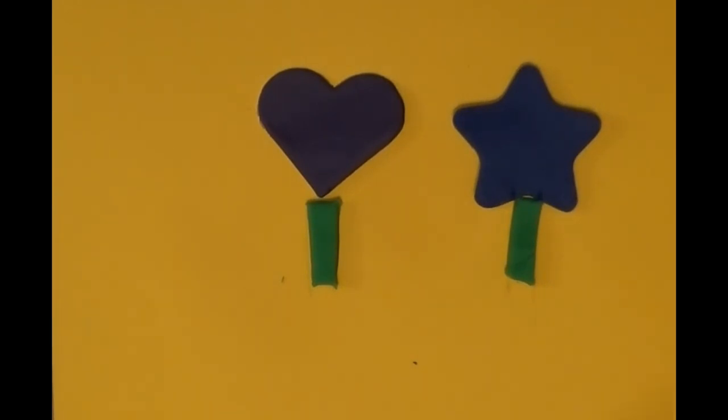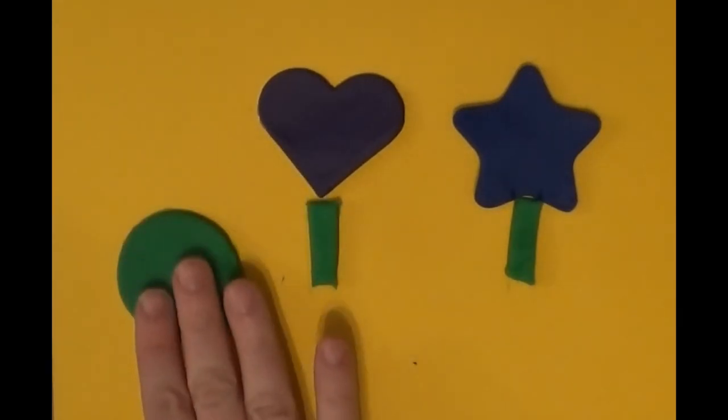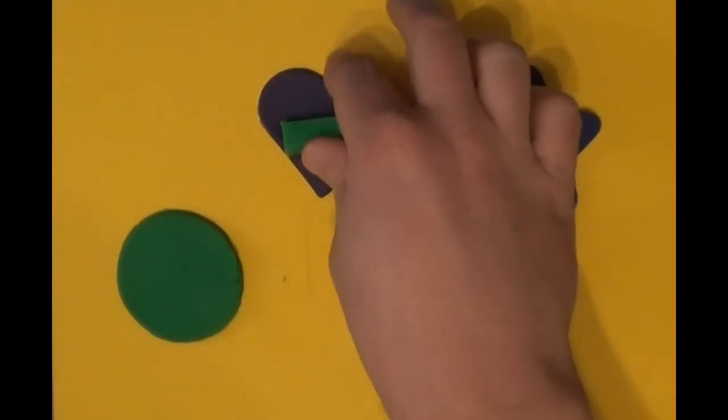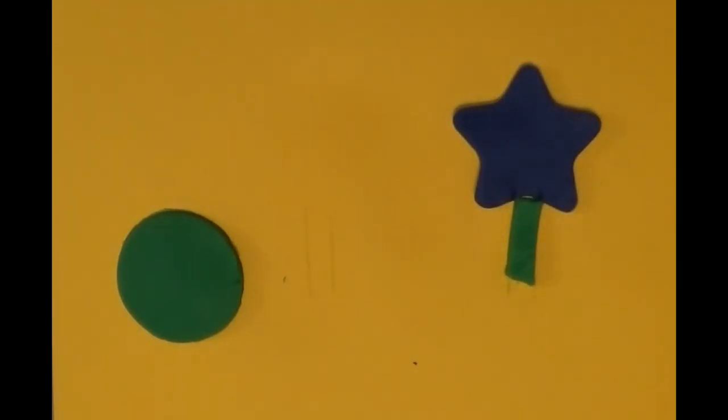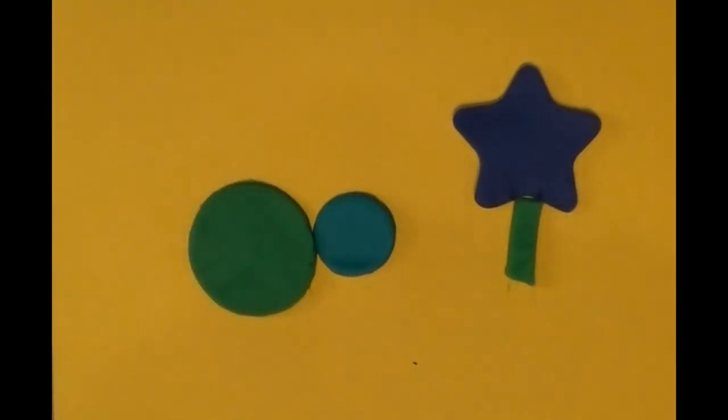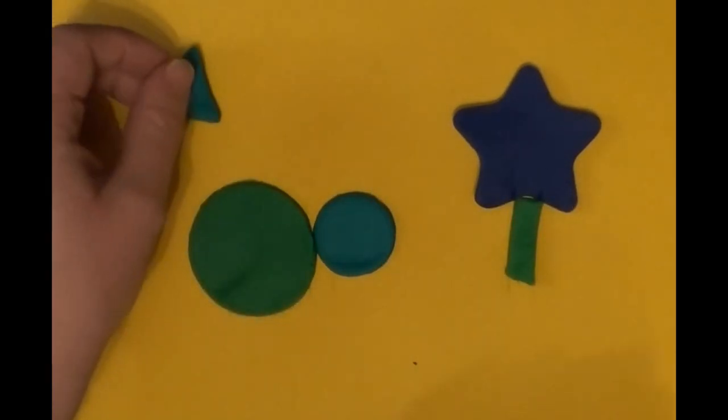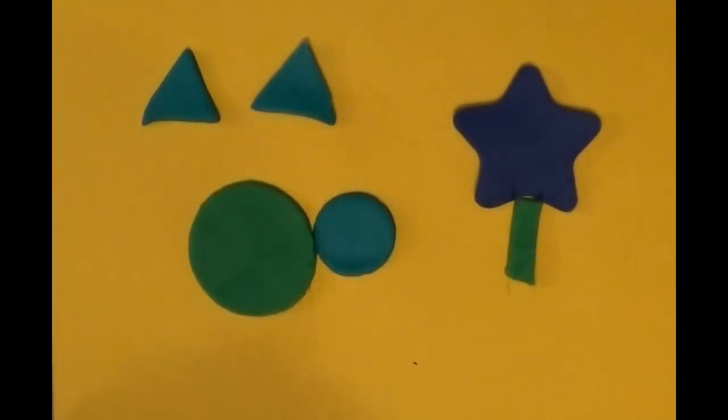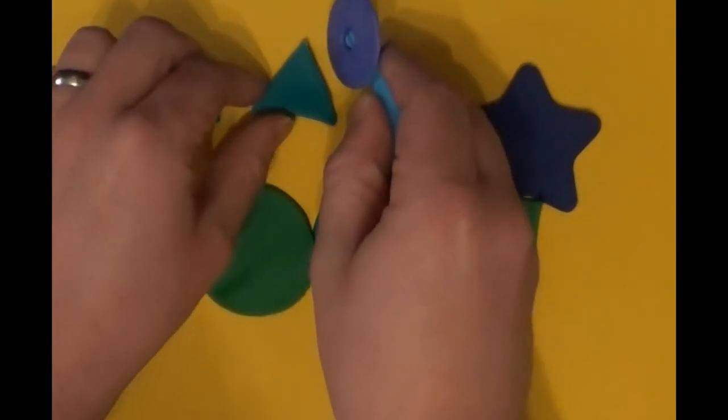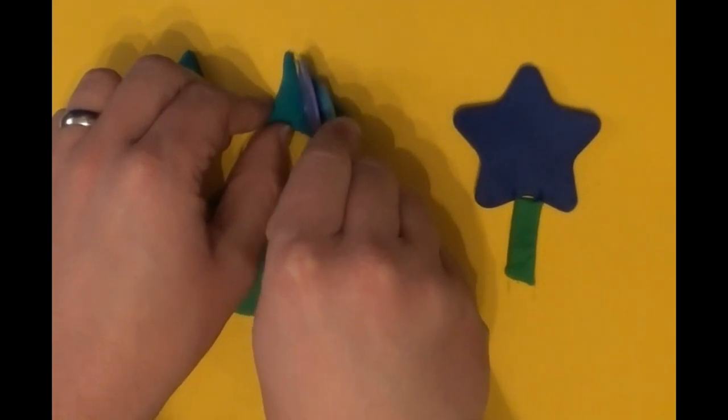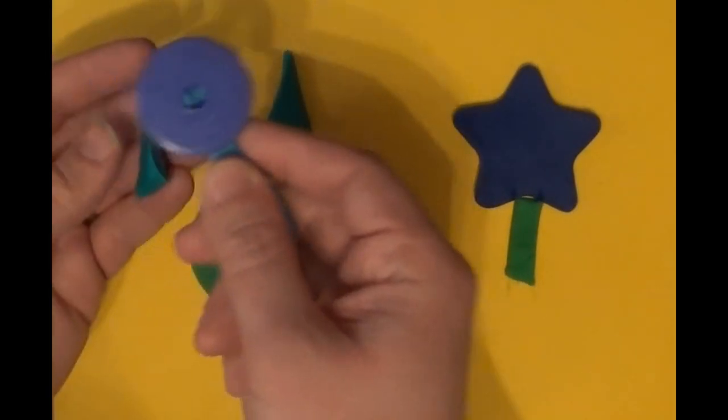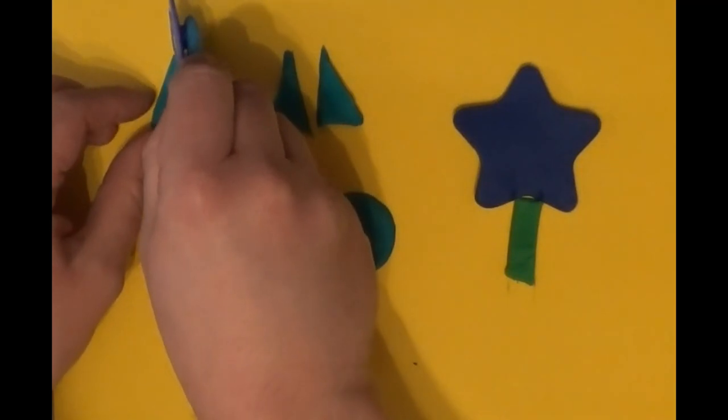Last but not least, our turtle. So I have a green circle, a blue circle, and I have two blue green triangles. I'm going to take our cutting tool and I'm going to make, instead of having two triangles, we're now going to have four triangles.